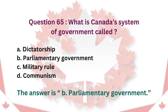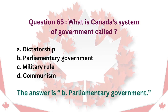Question 65: What is Canada's system of government called? A. Dictatorship. B. Parliamentary government. C. Military rule. D. Communism. The answer is B. Parliamentary government.